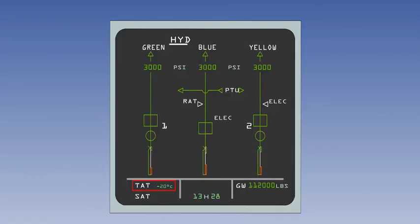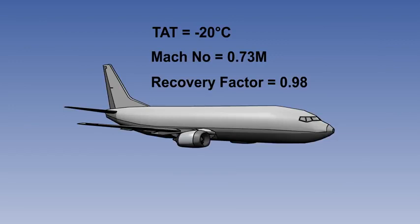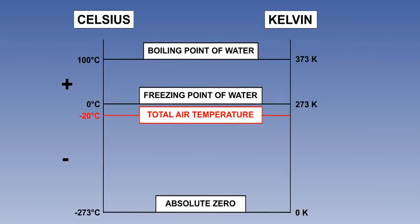Let's try a worked example. You are in a Boeing 737, and your indicated TAT is minus 20 degrees Celsius. The Mach number is 0.73, which is a typical speed for a Boeing 737 in long-range cruise mode. The recovery factor is 0.98, which is a typical value for a modern TAT probe. The value for KR is determined by flight testing and is published in the operating instructions for the aircraft. The TAT is minus 20 degrees Celsius, which is the same as 253 Kelvins, or 253 degrees absolute.